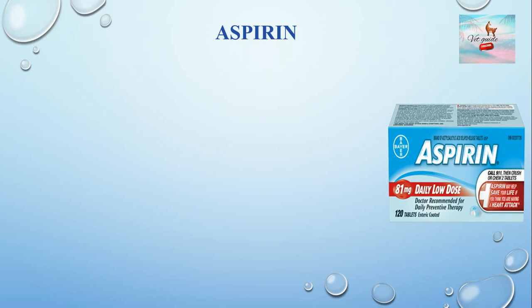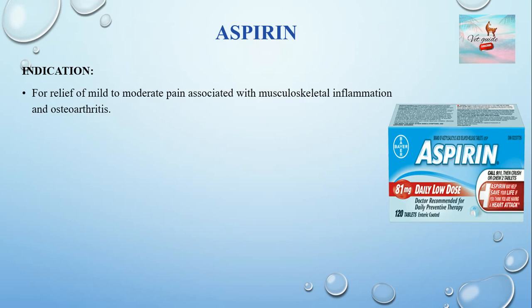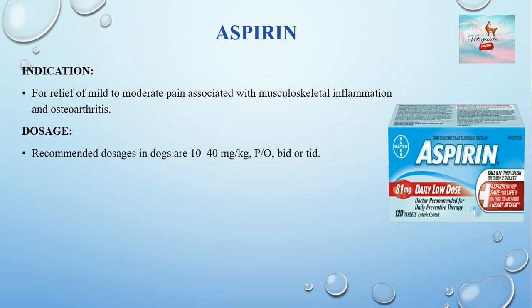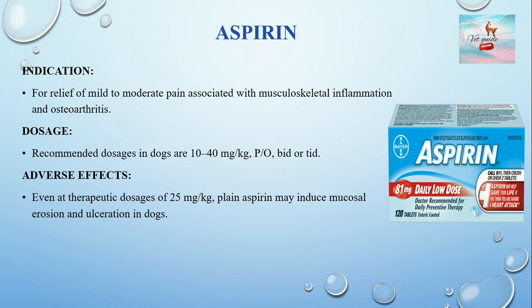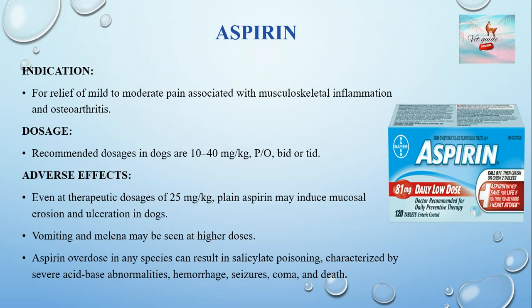Aspirin is used when animals indicate mild to moderate pain associated with musculoskeletal inflammation and osteoarthritis. Its dose rate in dogs is 10–40 mg/kg orally, twice or three times daily. Adverse effects can be seen even at therapeutic doses of 25 mg/kg; plain aspirin may induce mucosal erosion and ulceration in dogs. Aspirin overdose in any species can result in salicylate poisoning characterized by severe acid-base abnormalities, hemorrhage, seizures, coma, and death.